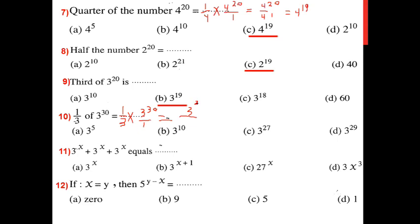Up is 3 power 30. And down: 3 times 1. Any number is power 1. And in division, what do I do to the power? Minus. Yes, wonderful. So 30 minus 1 equals 29. So it's equal to 3 power 29.